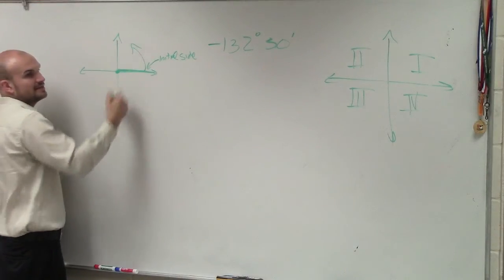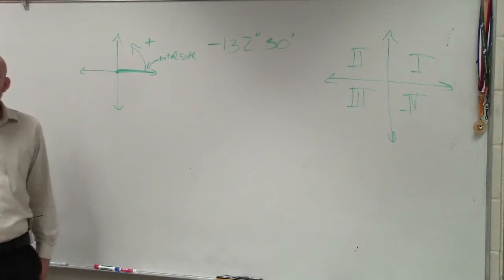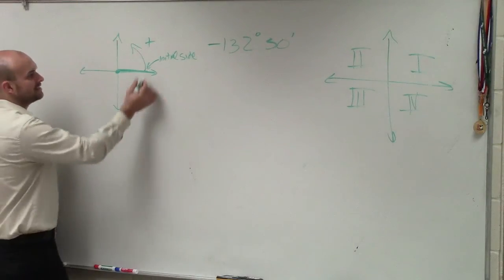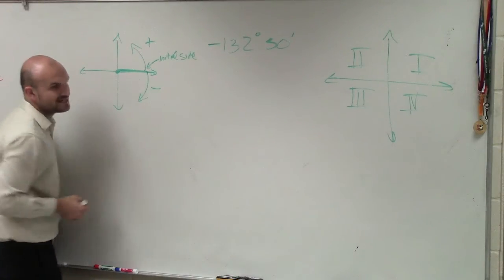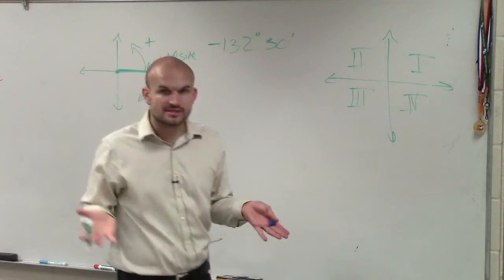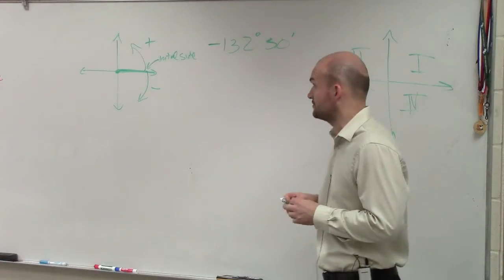If we rotate in the counterclockwise direction, the angle has a positive direction. And if we rotate in the clockwise direction, the angle has a negative direction. The value is still always going to be positive, but the direction will either be positive or negative.